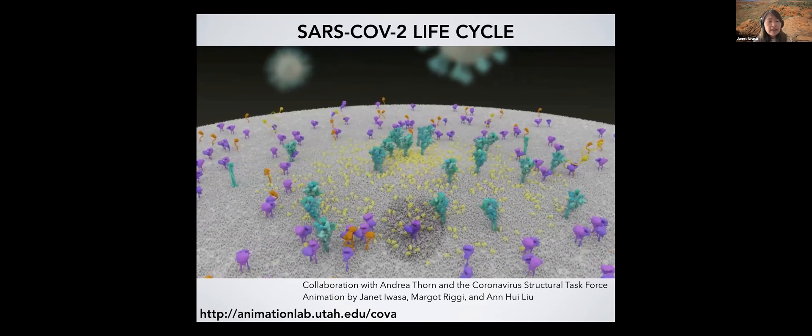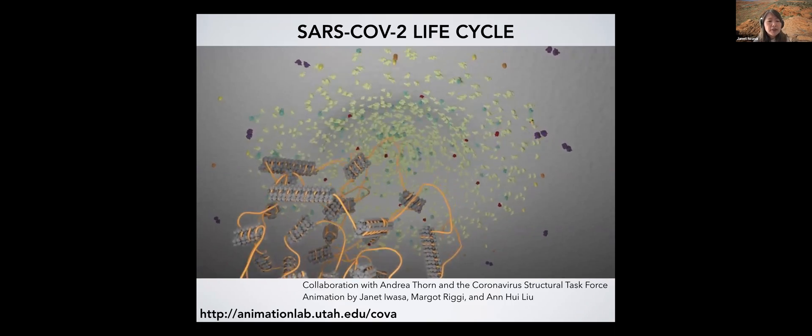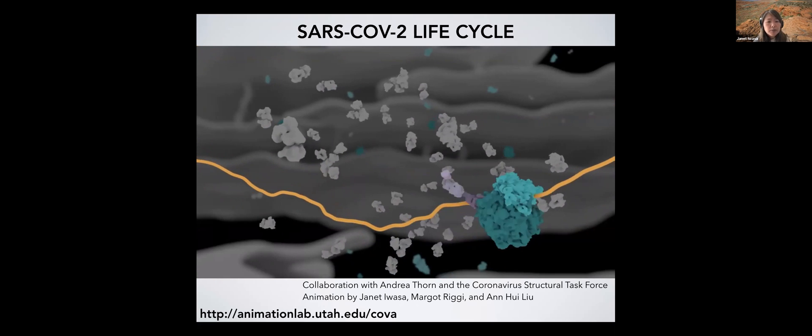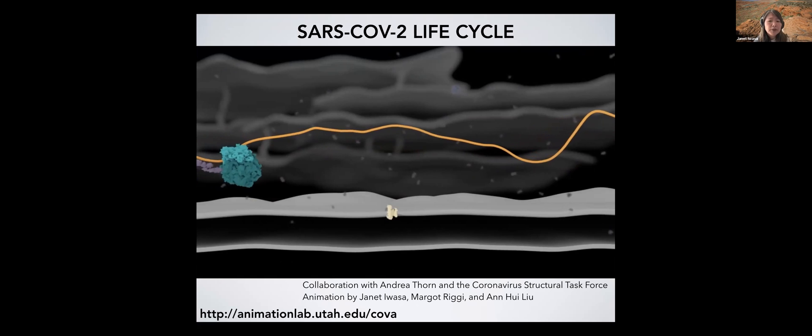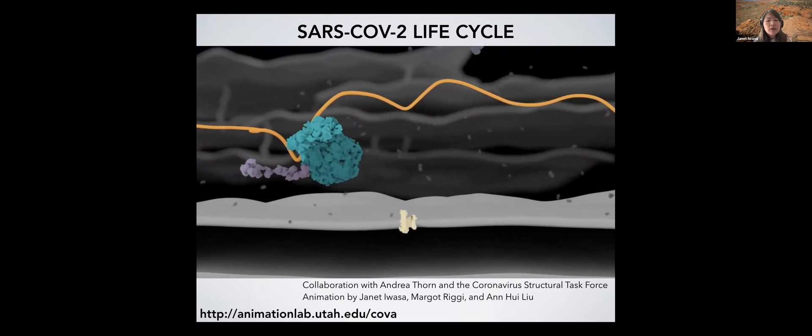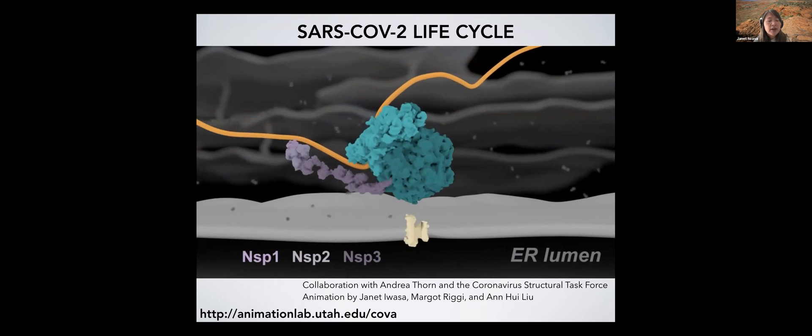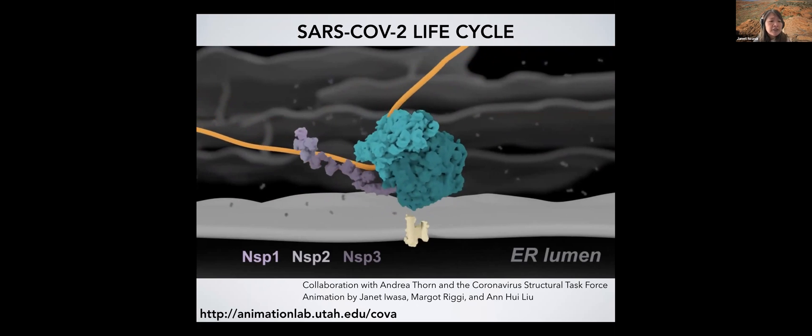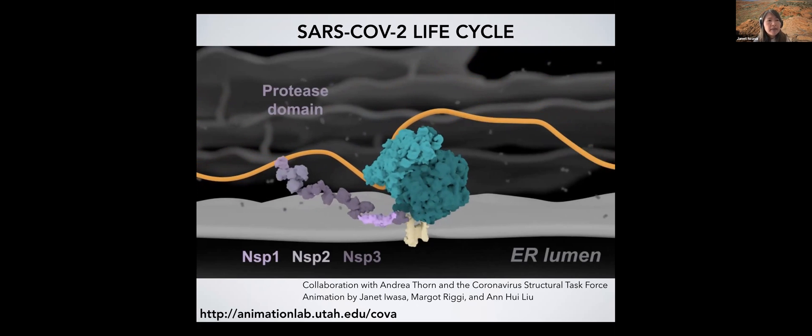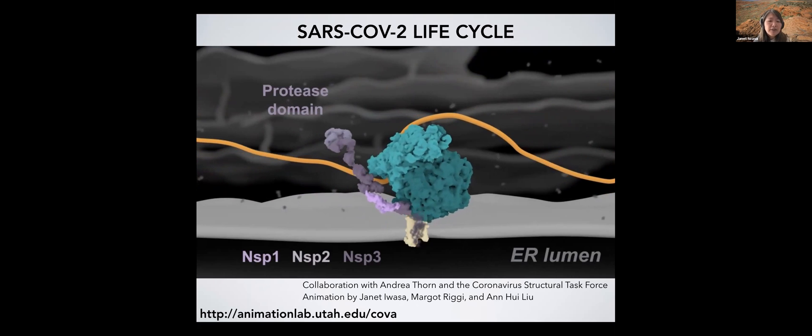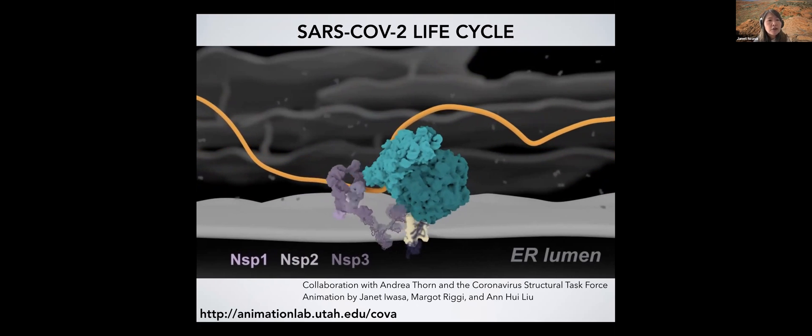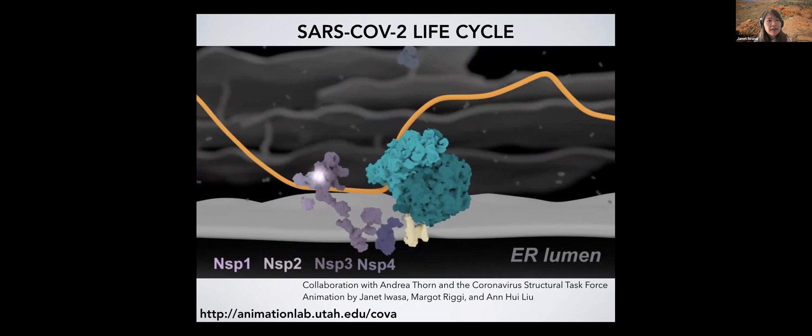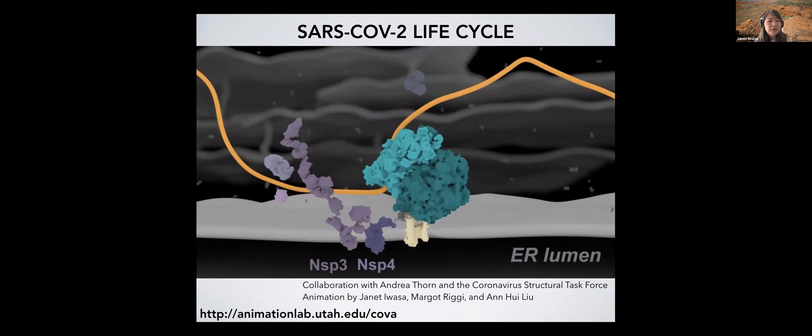The next stage shows early translation. So soon after nucleocapsid entry, ribosomes are recruited to the viral RNA, and they start translating viral proteins. These proteins are called non-structural proteins, or NSPs, and they're initially translated as a long chain of proteins. They generally, these proteins have a large range of functions. So some of the NSP genes encode proteases that can cut the NSPs apart, and that's necessary for their function.